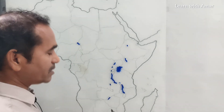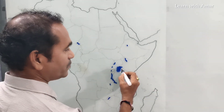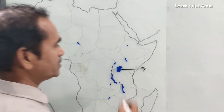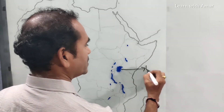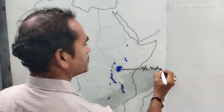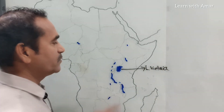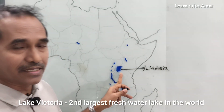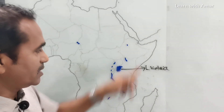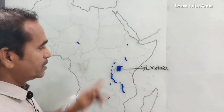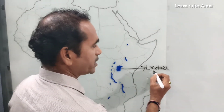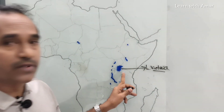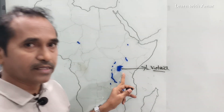Now, this one is the second largest freshwater lake. You know what is the name of this lake? It is Lake Victoria. Lake Victoria is the second largest freshwater lake in the world. It is the first largest in Africa. The name Victoria — it was named after Queen Victoria in the UK.